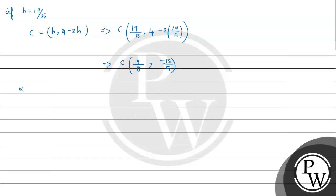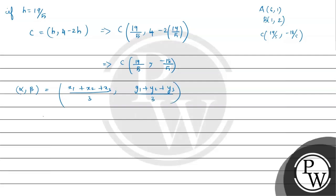Now alpha comma beta is the centroid. We have A = (6, 1), B = (1, 2), and C = (19/5, −18/5). Applying the centroid formula: x = (6 + 1 + 19/5) / 3 and y = (1 + 2 − 18/5) / 3. Simplifying: x = (30 + 5 + 19) / 15 = 54/15 and y = (5 + 10 − 18) / 15 = −3/15.